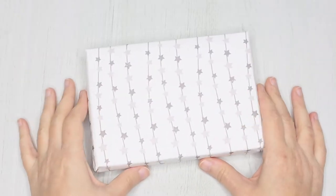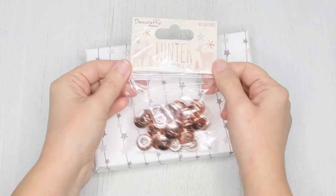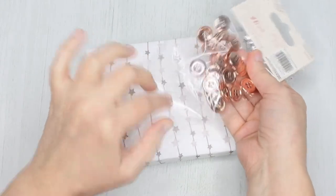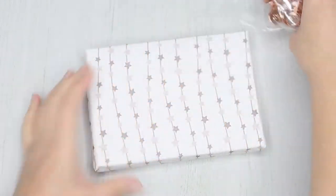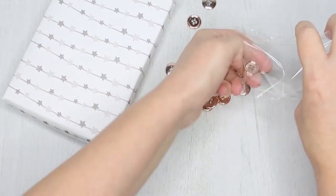The gift I'm using today is wrapped in a lovely star patterned paper. For today's project I'm using the Winter Sparkle Buttons bag from Craft Label. You'll find the link in the description below. These have a nice rose gold color and you get 60 buttons in a bag.